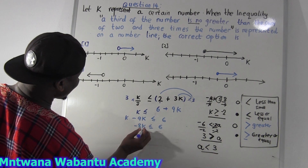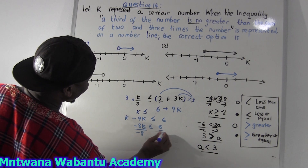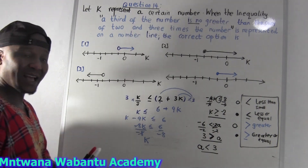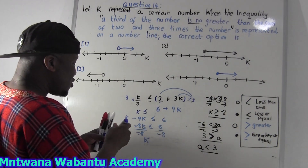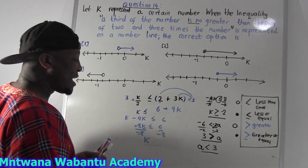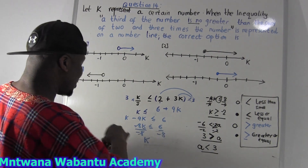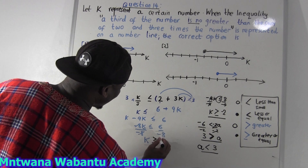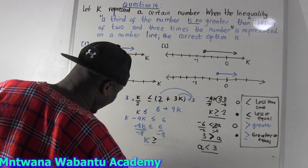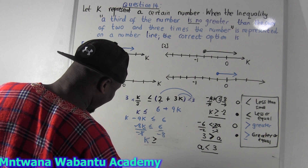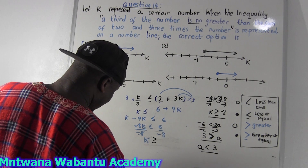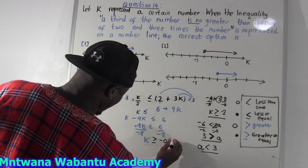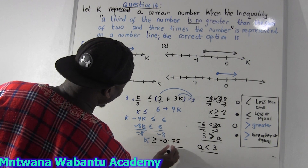I want to get the value of K, so divide both sides by negative 8. This is the key concept: the moment you have an inequality and you divide by a negative number, the direction of the inequality changes. So since we divided by negative, it's not going to be less or equal — it's going to be greater or equal. Six divided by eight gives 0.75, so K ≥ negative 0.75.